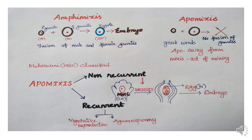There are two synergids in the egg. The secondary nucleus is a two-nucleate structure. Next, there are three antipodals. The micropylar region contains the egg and synergids. The egg is a haploid cell. The embryo sac is haploid in nature. The secondary nucleus is two-nucleate, but the other cells are haploid — single nucleate. So this is a non-recurrent haploid cell.